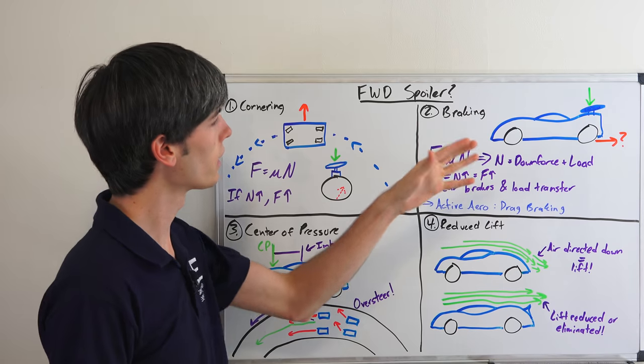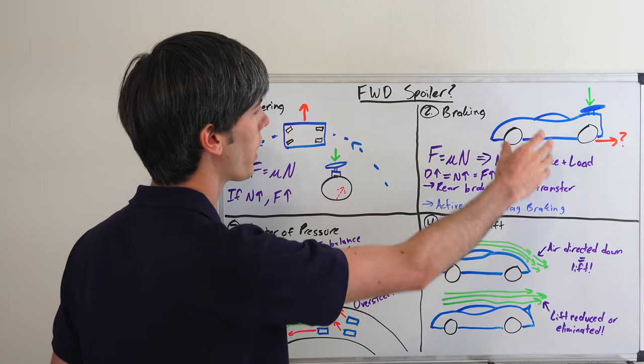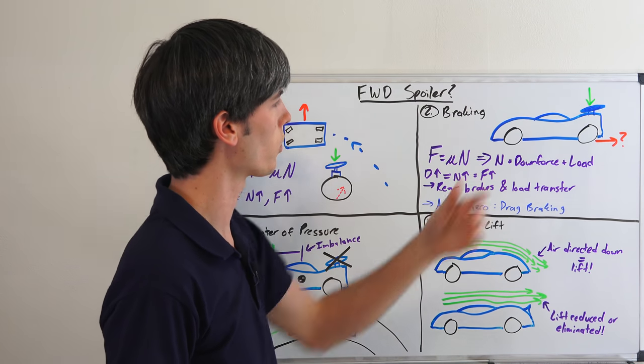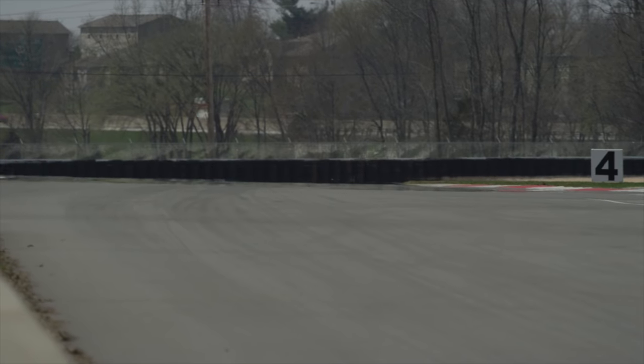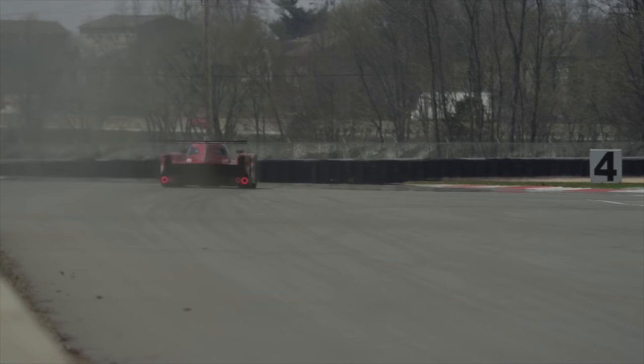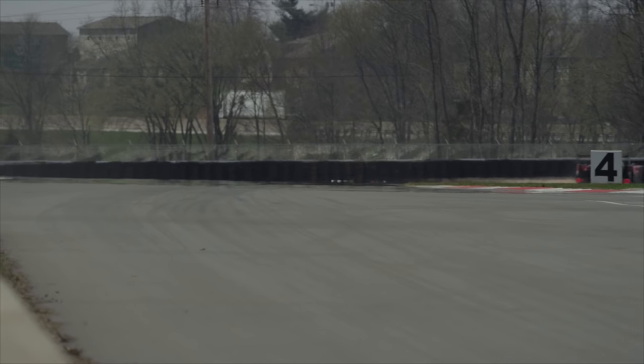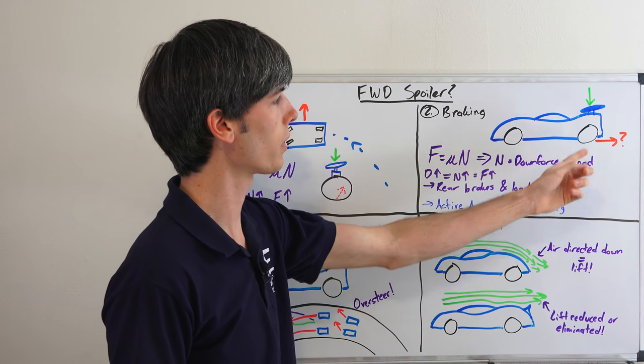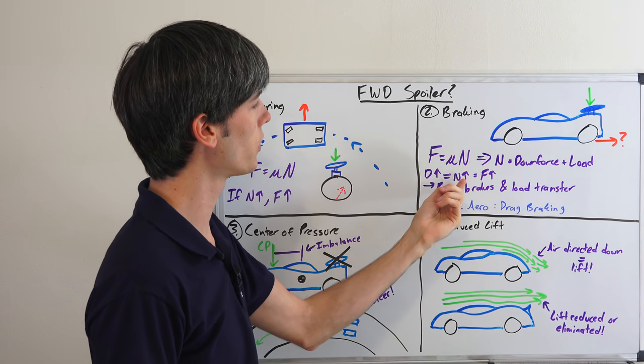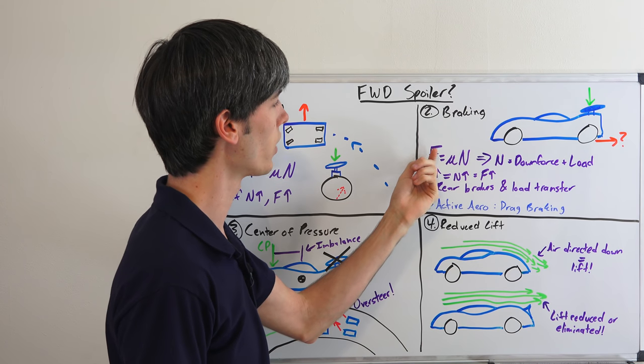Let's move on to braking. So here we have a vehicle and it's front wheel drive and it's got this rear wing on the back giving it plenty of downforce on that rear wheel. Well why would you want more downforce on it? Same equation, same idea basically. If you increase the downforce, normal force is equal to the downforce plus the load on the tire. So you're increasing the normal force. Increasing the normal force increases the braking force.